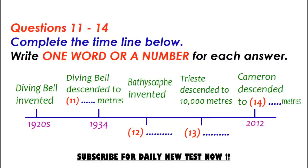The problem with the diving bell was that it had no power of its own, and there wasn't much room for the researchers to move around. So, the next development after the diving bell was the bathyscafe, a small manned submarine invented in the 1940s. The difference between the two was that the bathyscafe had its own power source. A bathyscafe called the Trieste reached a record depth of 10,000 metres in 1960. Since then, a new record has been set by James Cameron, who descended to a depth of 11,000 metres for the first time in 2012.